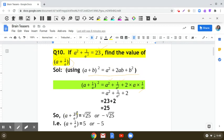Now a + 1/a we have to find. So a + 1/a will be equal to ±√25. So it can take two values, ±√25.